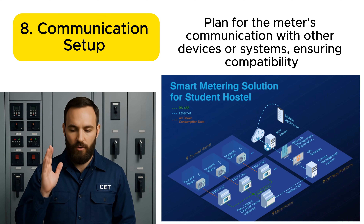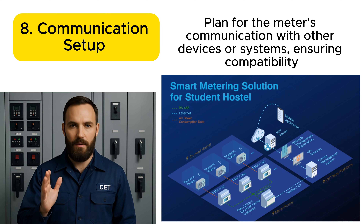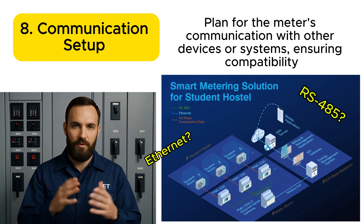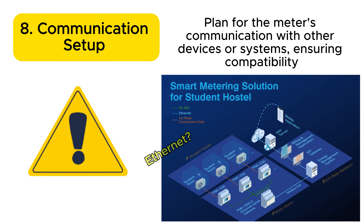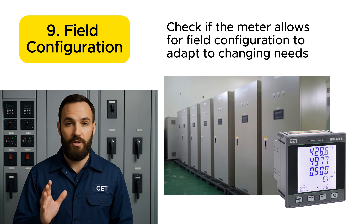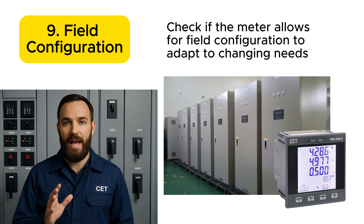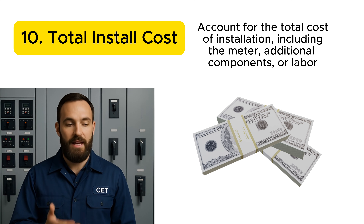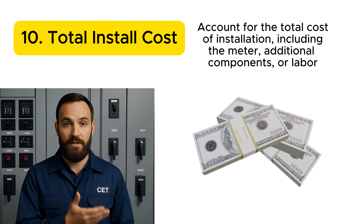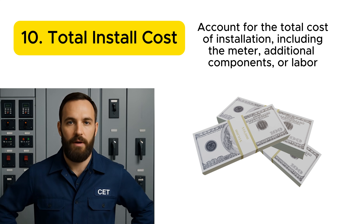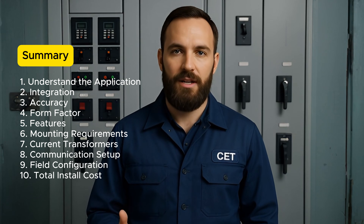Number 8: Communication setup. Plan for the meter's communication with other devices or systems, ensuring compatibility. Number 9: Field configuration. Check if the meter allows for field configuration to adapt to changing needs. Number 10: Total cost. Account for the total cost of installation, including the meter, additional components, and labor. By considering these factors,